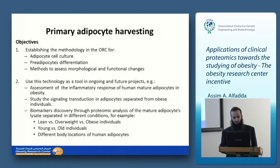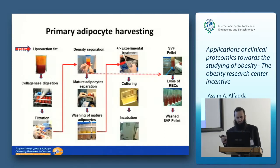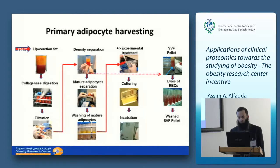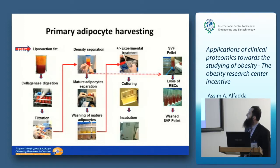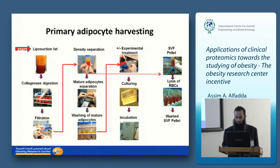We optimized the primary adipocyte harvesting technique and succeeded. We take fat cells by liposuction from these areas and process the samples using different techniques including collagenase digestion, followed by a separation and wash step to isolate primary adipocytes, which can then be treated with various treatments. We also have the stromal vascular fraction (SVF), containing mostly pre-adipocytes and other cells, which we can differentiate into mature adipocytes. This technique has been very helpful for studying adipocyte biology.